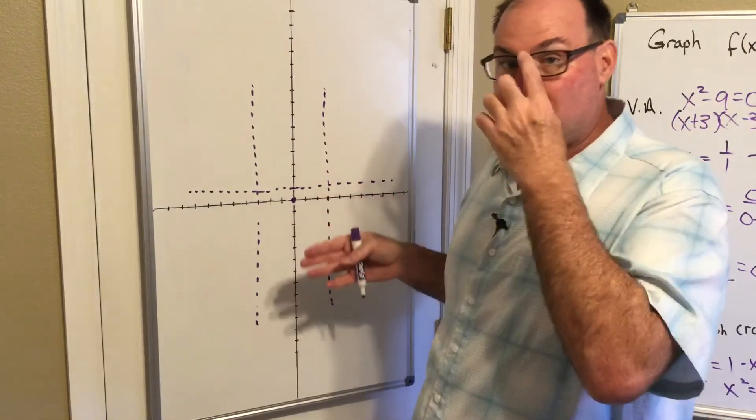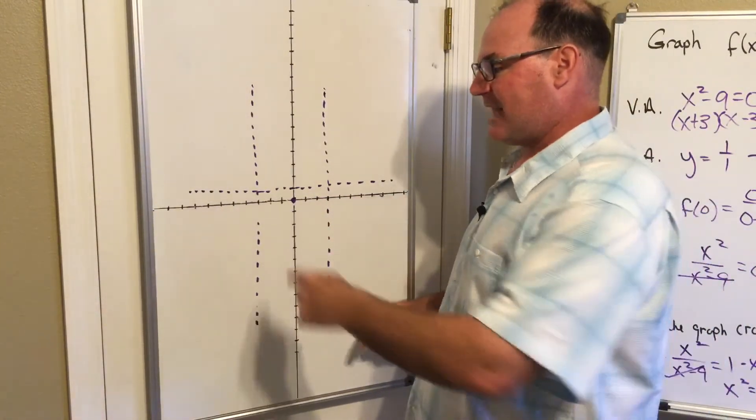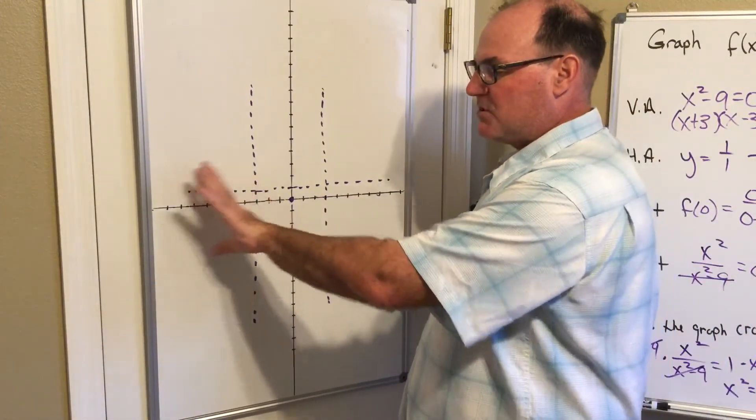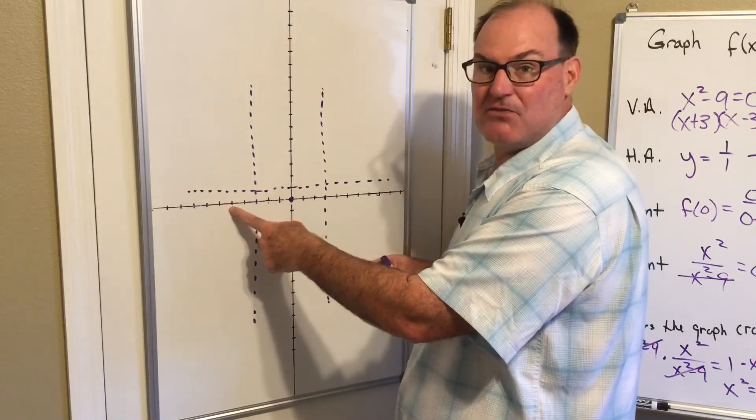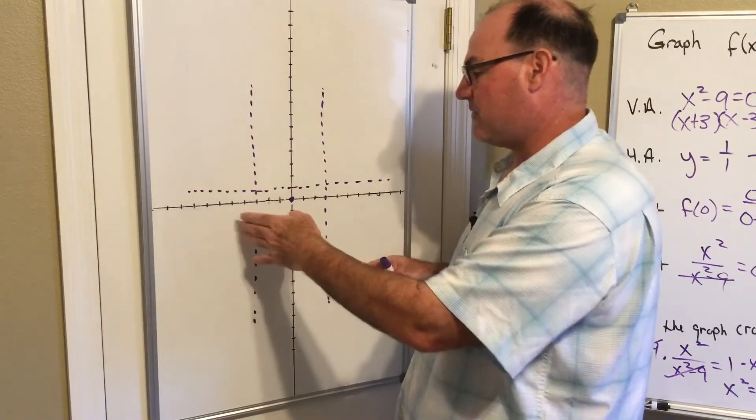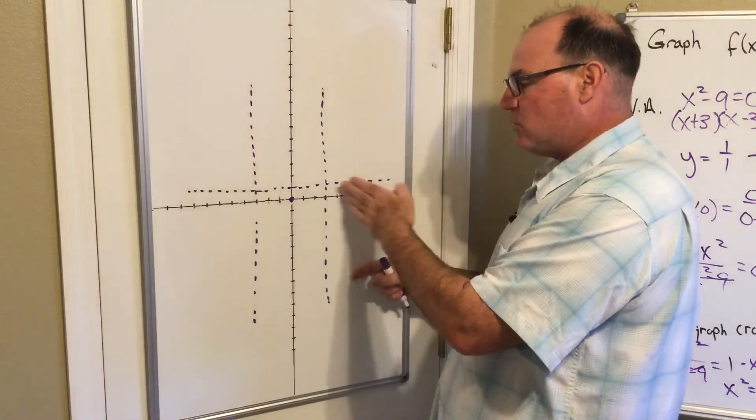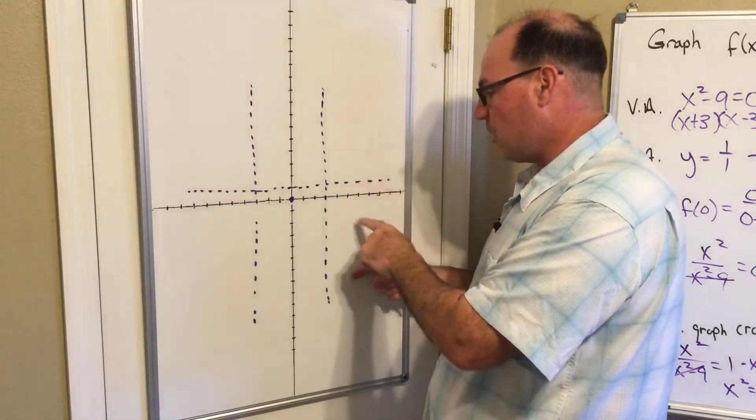I don't have a whole lot of information, so what I'm going to do is plug in a value to the left of this vertical asymptote, say negative five. I'm going to plug in an x value to the right of this vertical asymptote, positive five.